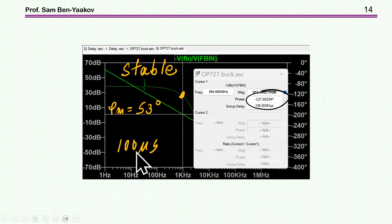Now, going up to 100 microseconds delay, I am again reducing the phase margin. It is still okay. 127 degrees phase lag, total phase lag. So we are farther from the 180, 53 degree distance. So it's a stable system.